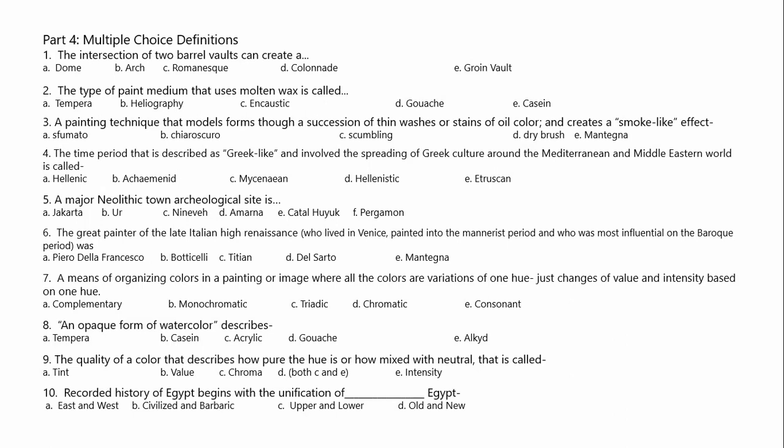The multiple choice questions. The intersection of two barrel vaults can create a groin vault — E. The type of paint medium that uses molten wax is called encaustic. A painting technique that models forms through a succession of thin washes is A, sfumato.